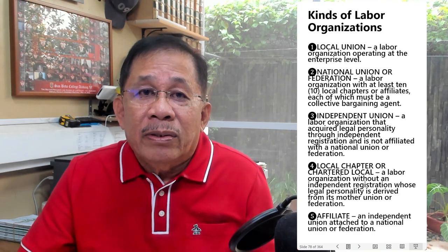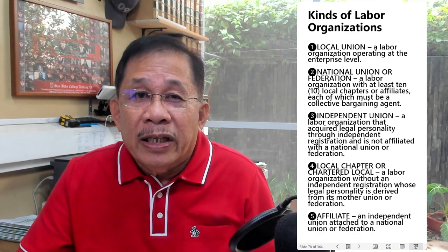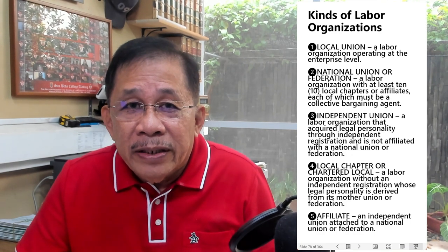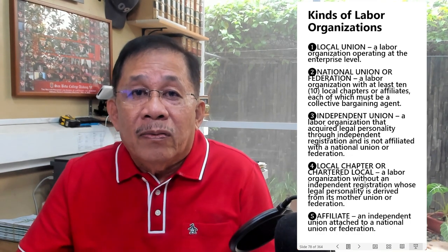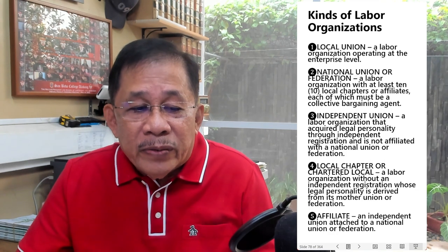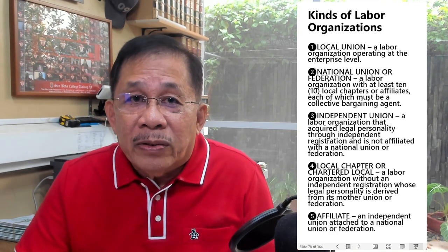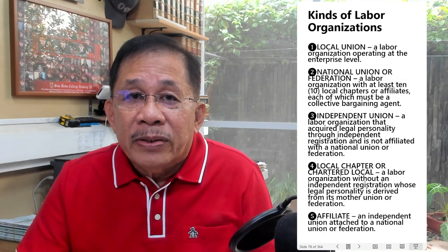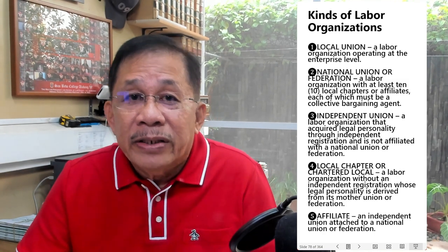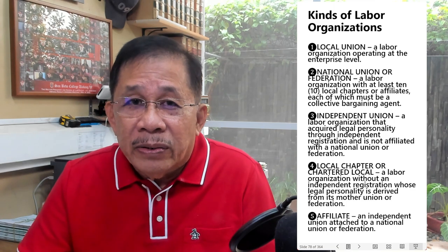We have the national union or federation, which is a labor organization with at least 10 local chapters or affiliates, each of which must be a collective bargaining agent. Then we have the independent union, which is a labor organization that acquired legal personality through independent registration and is not affiliated with a federation or national union.